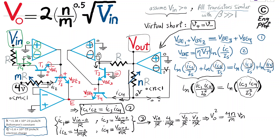Taking the square root of both sides, we get exactly what we wanted: Vout = 2·√(N/M) · √Vin. This confirms that the circuit is effectively a square-root analog circuit — an active analog circuit implemented using four op-amps and four bipolar junction transistors that computes the square root of a positive input voltage. The output voltage is proportional to the square root of the input voltage.